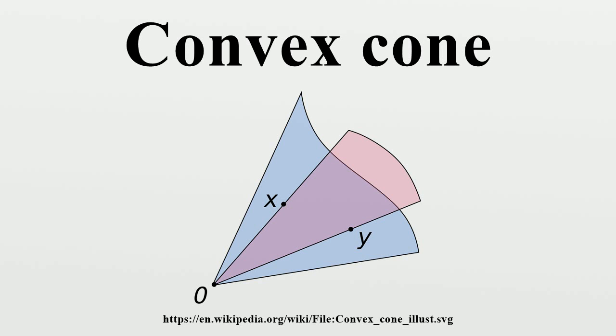The intersection of two convex cones in the same vector space is again a convex cone, but their union may fail to be one. The class of convex cones is also closed under arbitrary linear maps. In particular, if C is a convex cone, so is its opposite minus C, and C minus C is the largest linear subspace contained in C.